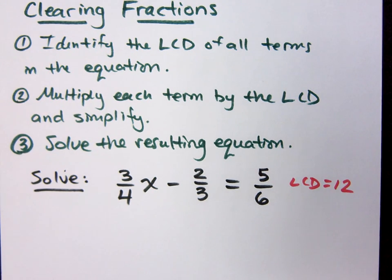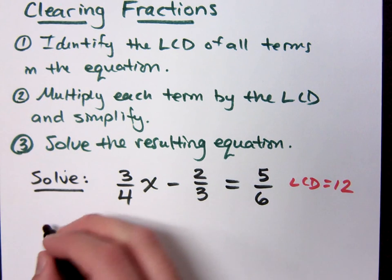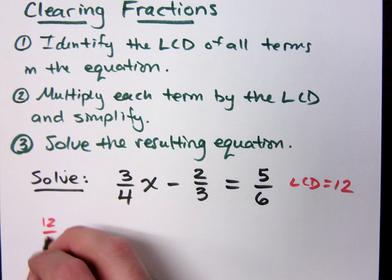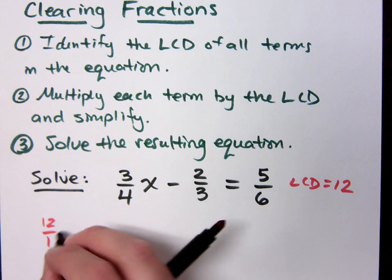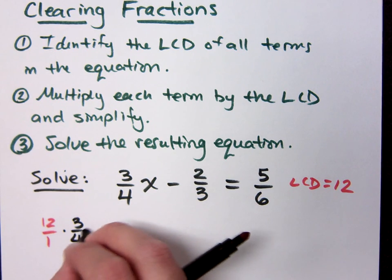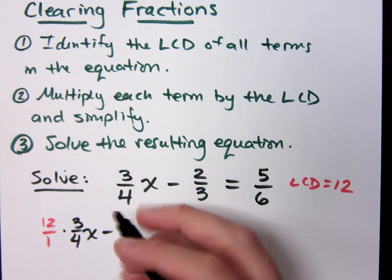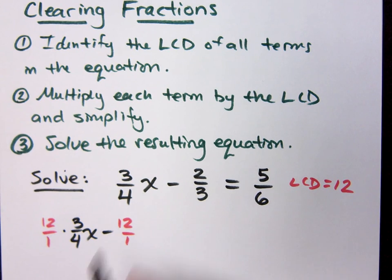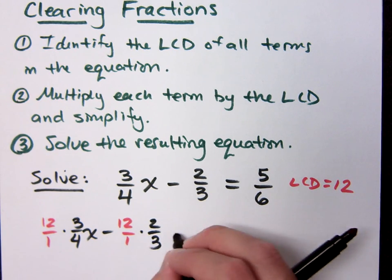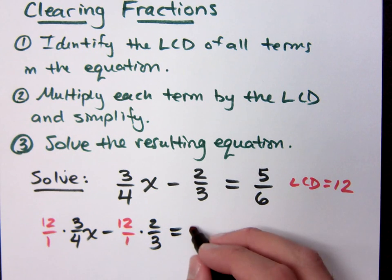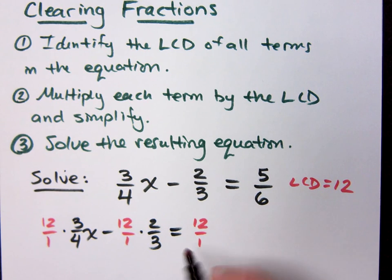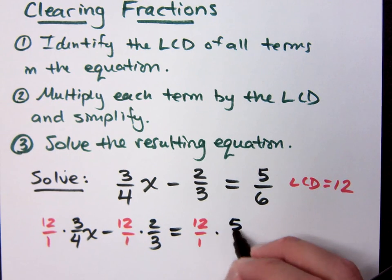Now here's what we do with the 12. We multiply everything times the LCD. That means I'm going to take 12 over 1 times 3 over 4x minus 12 over 1 times 2 thirds is equal to 12 over 1 times 5 over 6.